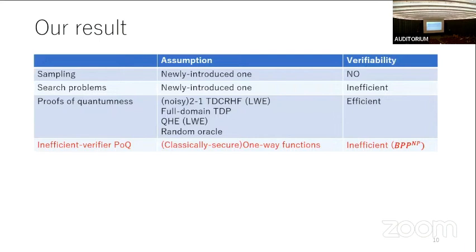Unfortunately our IVPoQ is not efficiently verifiable — the verifier should be inefficient, at most BPP^NP.